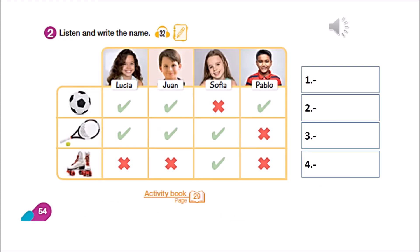Student's book, page 54, track 32. Listen and write the name. One — who's this? He likes football. He likes tennis. He doesn't like rollerblading. Two — who's this? She doesn't like football. She likes tennis. And she likes rollerblading. Three — who's this? She likes football. She likes tennis. She doesn't like rollerblading. Four — who's this? He likes football. He doesn't like tennis. And he doesn't like rollerblading.